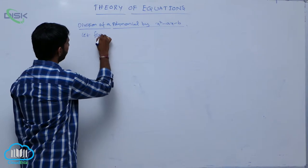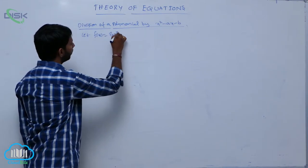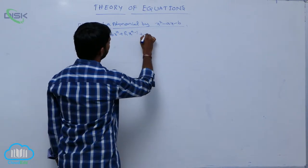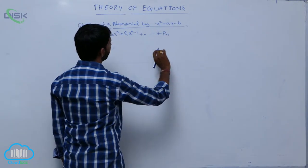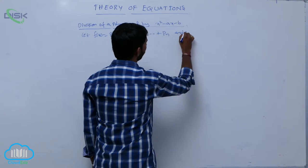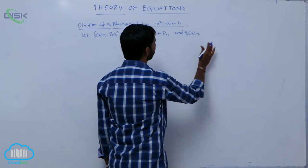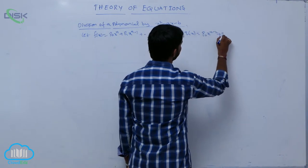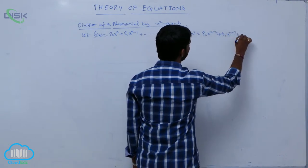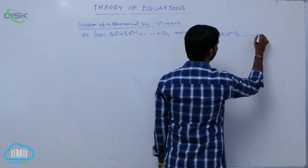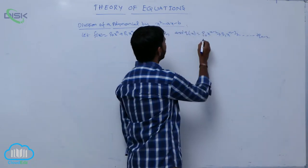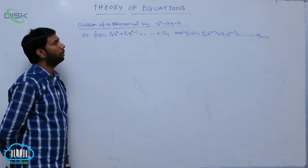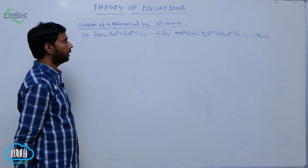Let f of x be equal to p naught times x to the power n, plus p one times x to the power n minus one, and so on up to p n. And q of x is equal to q naught times x to the power n minus two, plus q one times x to the power n minus three, and so on up to q n minus two.